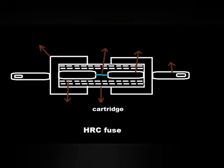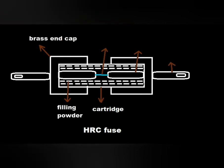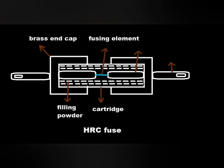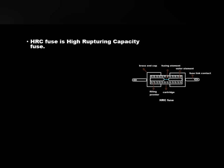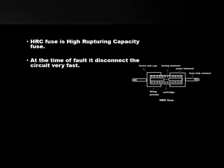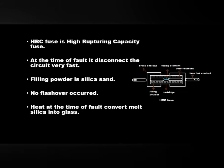HRC fuse is high rupturing capacity fuse. At the time of fault it disconnects the circuit very fast. Filling powder is silica sand. No flashover occurred. Heat at the time of fault converts melt silica into glass.